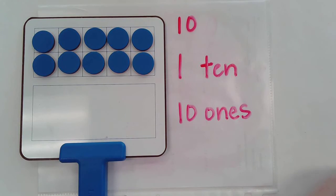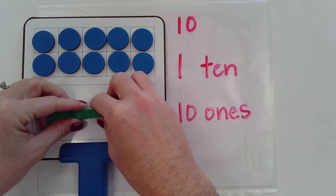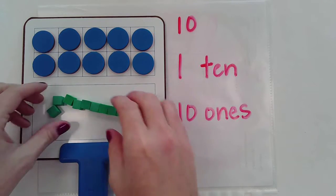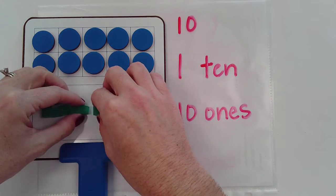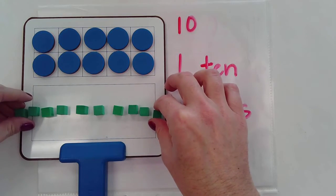You can also use place value blocks to think about it. I have a ten here. I have one ten, or I have ten ones.